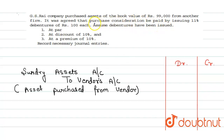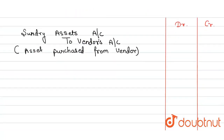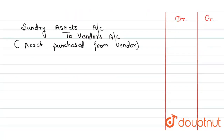Purchase consideration be paid by issuing 11% debentures of Rs. 100 each. Assume debentures have been issued at par, at a discount of 10%, and at a premium of 10%. The book value is Rs. 99,000. We have to show the first part at par. This is a full-fledged question in which we have to show premium, discount, and par. So first let's do par entries.